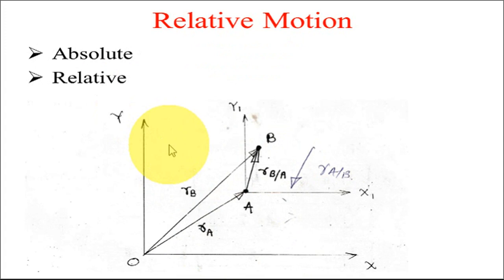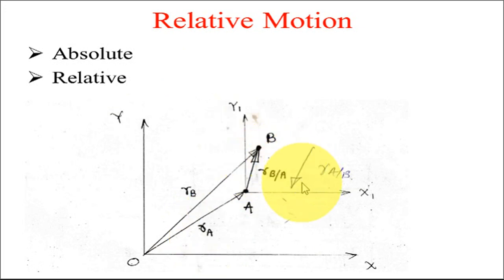While solving numericals, two terms will come up: absolute and relative, which you can relate with position — absolute position, relative position, or absolute velocity, relative velocity. In this figure, rb and ra are the absolute positions of B and A respectively, as they are represented with respect to the fixed system of axes, whereas r_B/A is the relative position of B with respect to A. The absolute position is the position of an object with respect to a fixed system of axes.